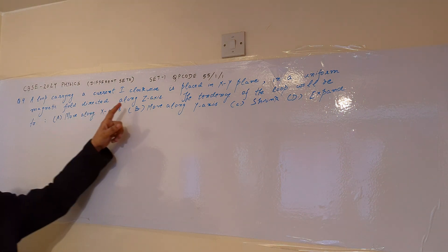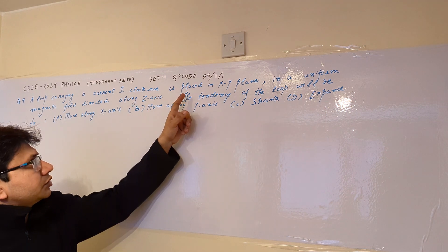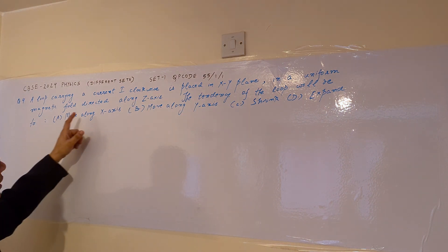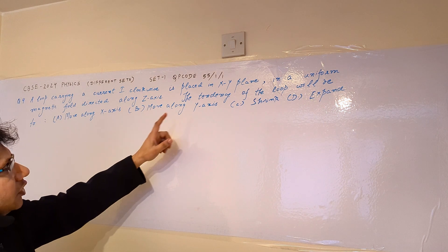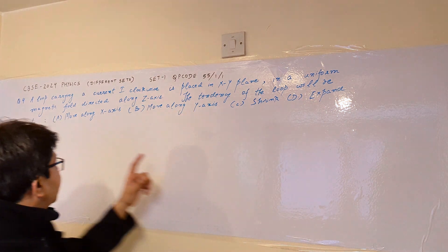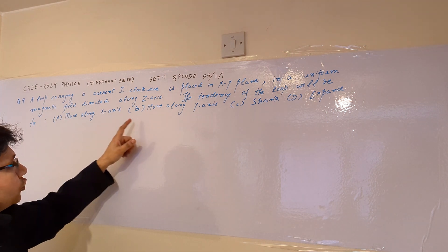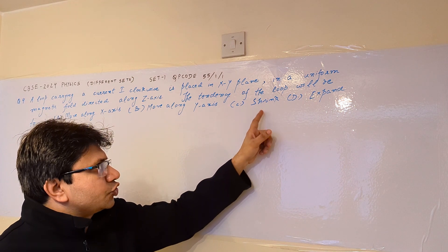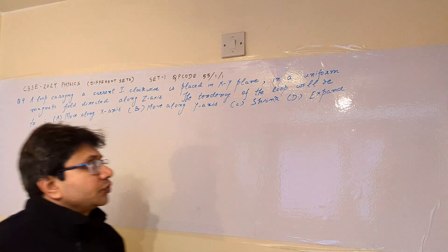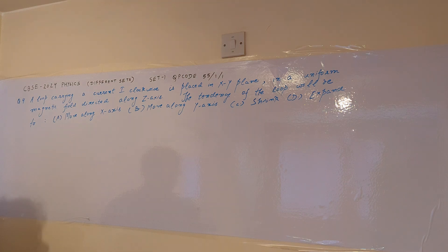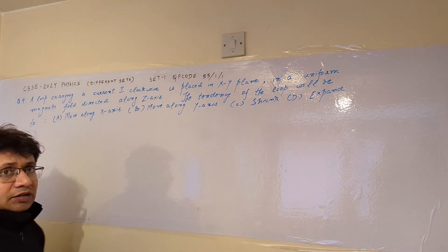A loop carrying a current I clockwise is placed in the XY plane in a uniform magnetic field directed along the Z axis. The tendency of the loop will be — option A: move along the X axis, option B: move along the Y axis, option C: shrink, and option D: expand. This problem is based on the concept of finding the force in a current-carrying loop placed in a magnetic field.